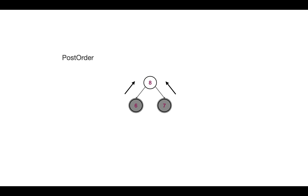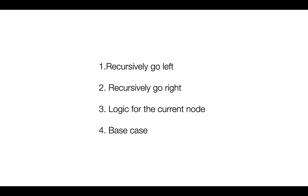In postorder, the sequence of steps is: we first go recursively towards left, then we go towards right to read the right subtree, then we do the logic for the current node, and then comes the base case. The steps remain the same; only the sequence changes. We can also solve these problems iteratively, but recursive solutions are more intuitive and concise, which is why we will go with recursion.